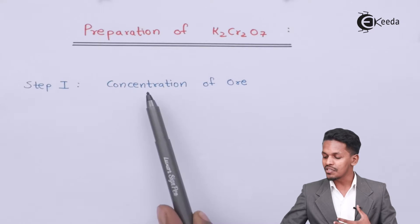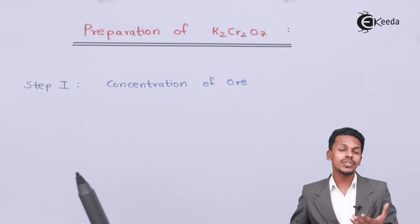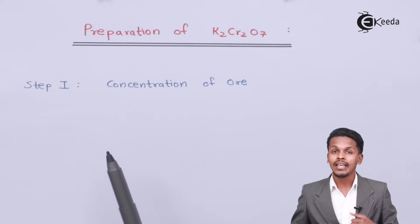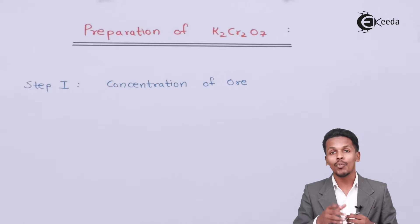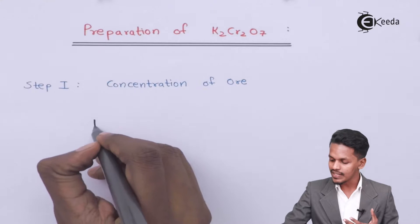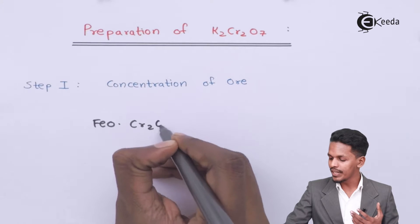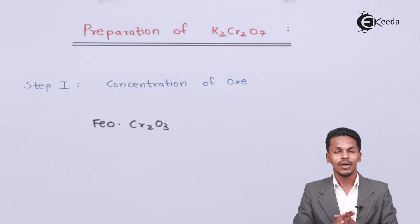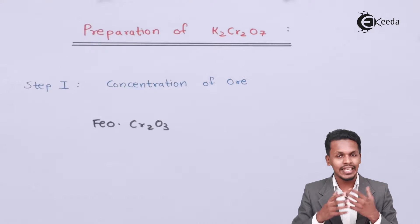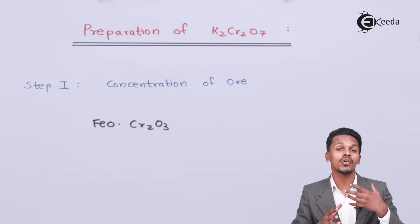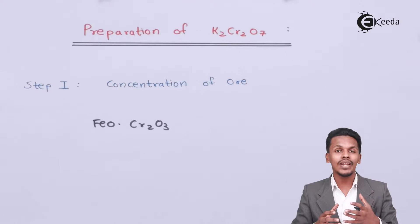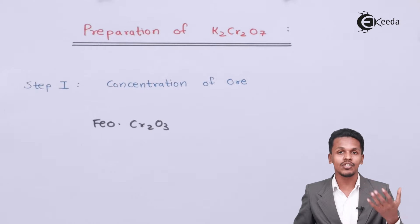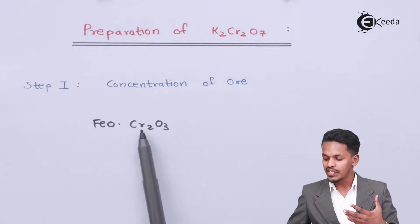Step number one is concentration of the ore. K₂Cr₂O₇ is a compound that can be obtained from the chromite ore, which is FeOCr₂O₃. This chromite ore is not pure and consists of other impurities as well. So the ore is passed through a hydraulic classifier in which we can separate out the gangue, and we obtain FeOCr₂O₃.